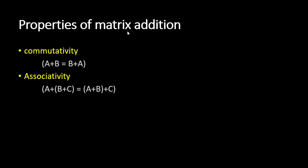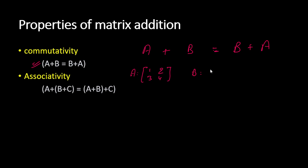Matrix addition has two properties: commutativity and associativity. Commutativity states that A + B = B + A. Let's take matrix A as [1, 2; 3, 4] and matrix B as [3, 4; 2, 1]. For A + B, we add corresponding elements: 1+3=4, 2+4=6, 3+2=5, and 4+1=5.